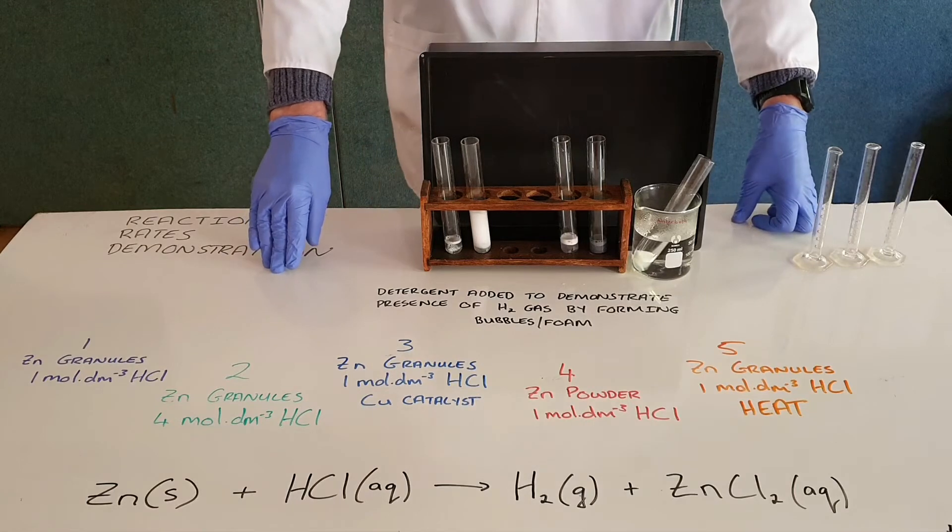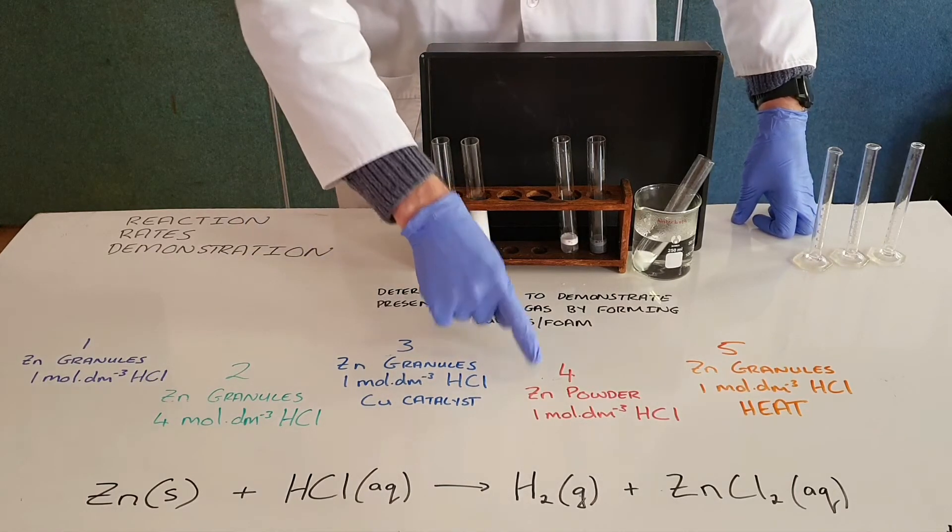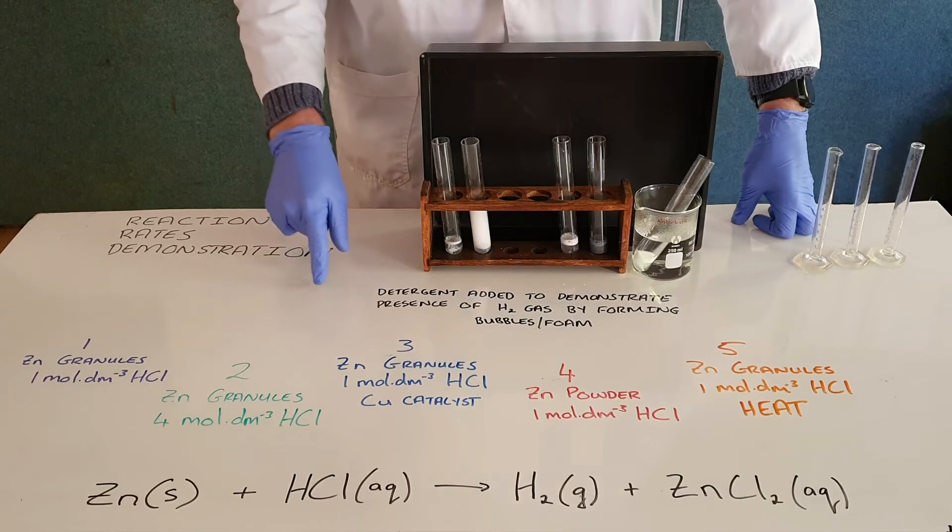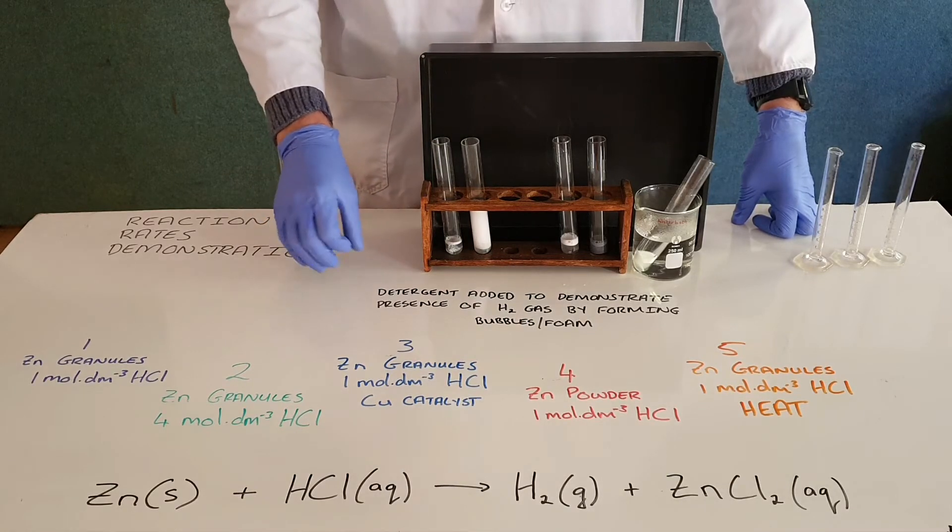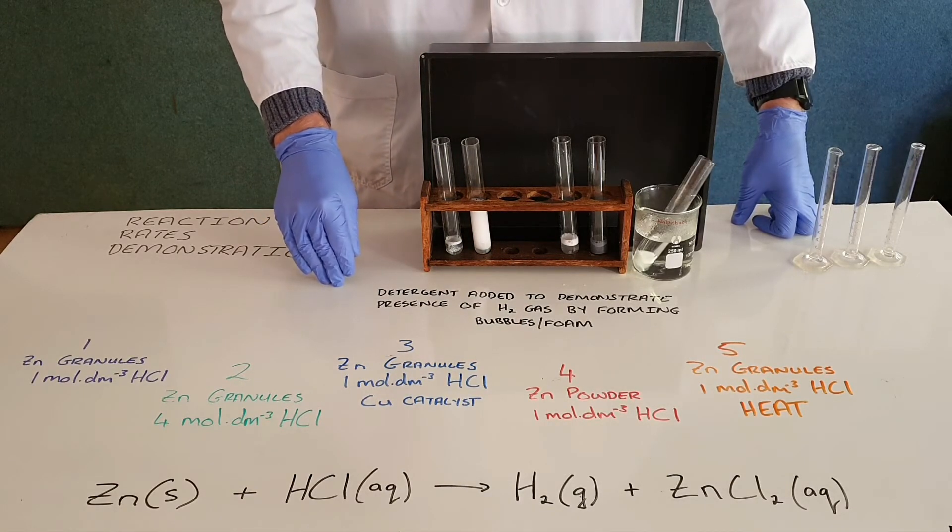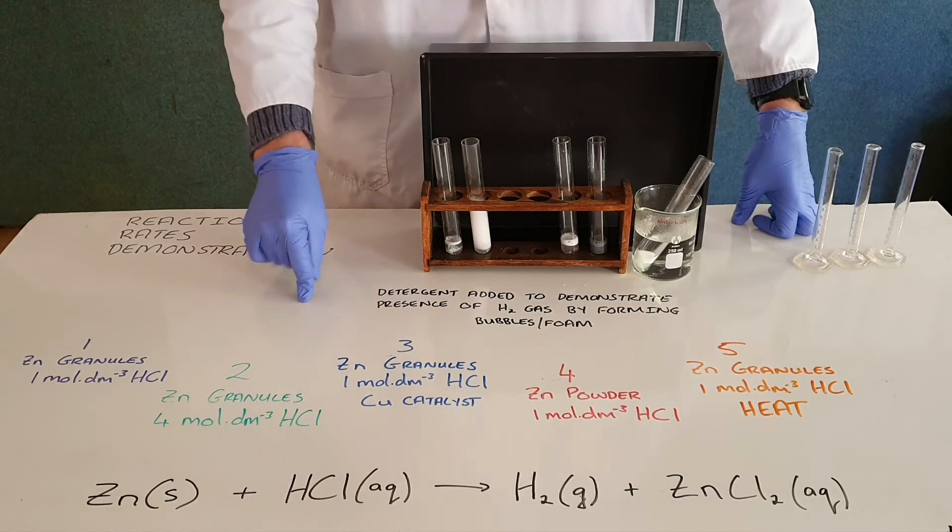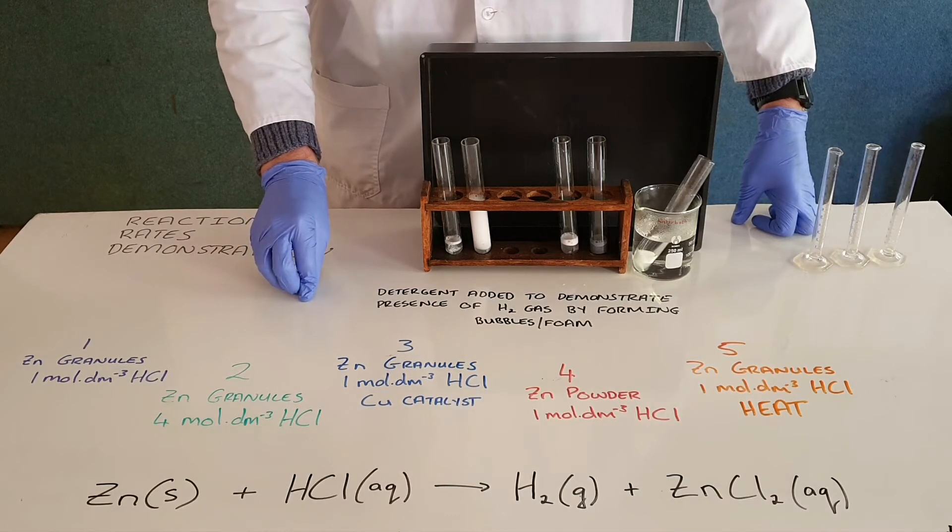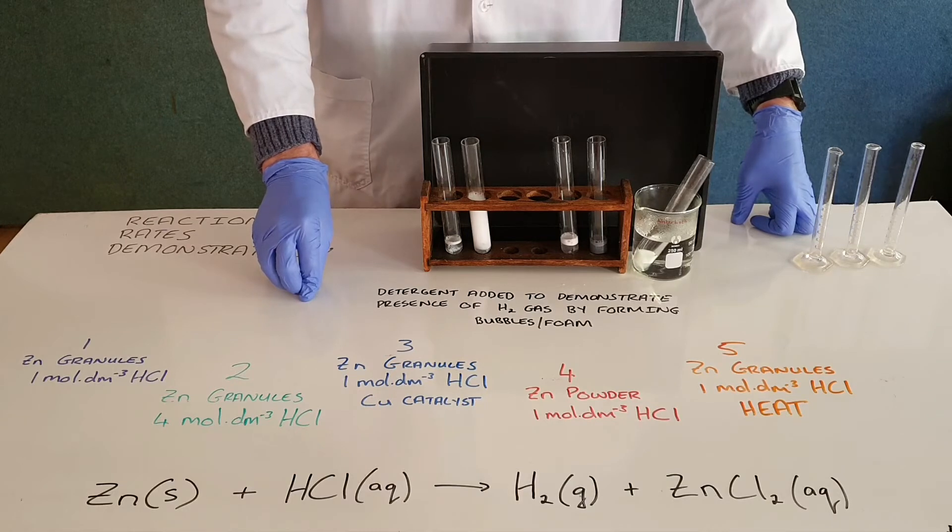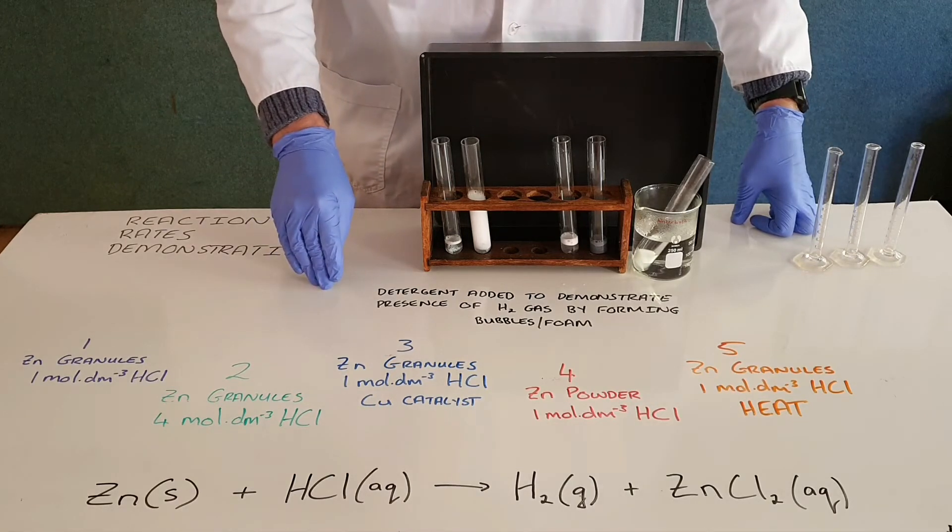The fourth test tube is a more complicated one. This is now zinc powder, so instead of using zinc granules or zinc chunks, we have now ground it into a powder, which means that we have increased the surface area of the zinc. So by collision theory that tells us that the reaction should proceed at a faster rate because there are more opportunities for collisions and therefore more successful collisions.